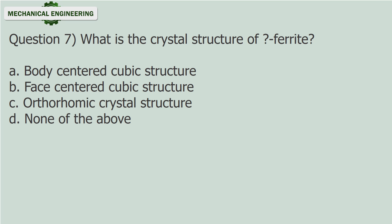Question 7: What is the crystal structure of ferrite? A. Body-centered cubic structure. B. Face-centered cubic structure. C. Orthorhombic crystal structure. D. None of the above.